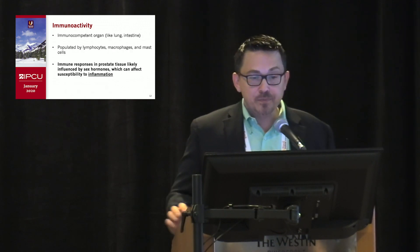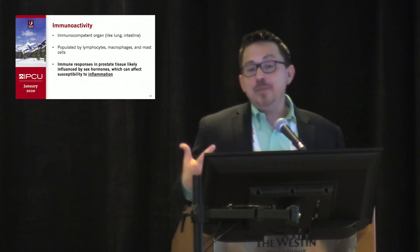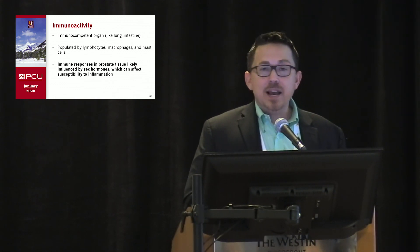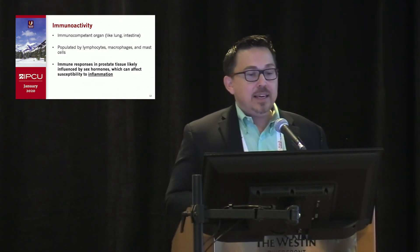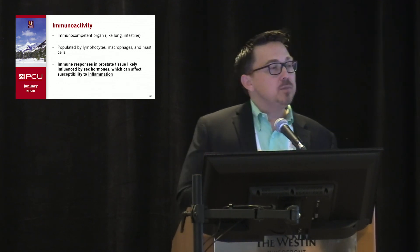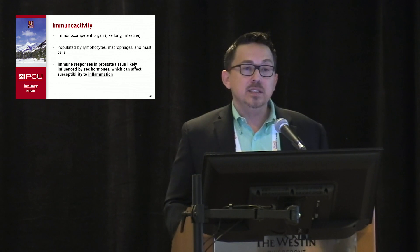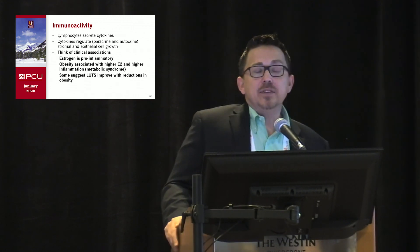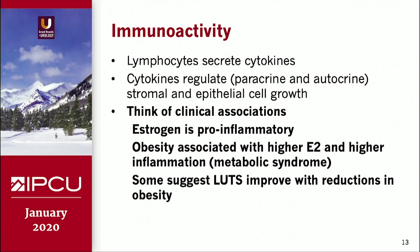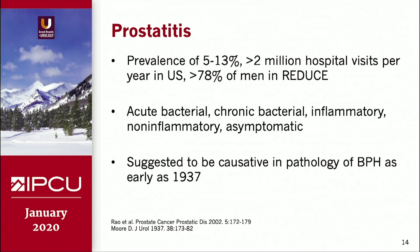The prostate, very similar to the lung and intestine, is an immunocompetent organ populated by lymphocytes, macrophages, and mast cells. Immune responses are largely influenced by the hormonal milieu, which can affect susceptibility to inflammation. Lymphocytes secrete cytokines that through both paracrine and autocrine mechanisms stimulate growth. For example, estrogen is a pro-inflammatory molecule; obesity is associated with higher estradiol and higher inflammation. Metabolic syndrome has been mentioned, and some studies have shown benefit with reductions in obesity.